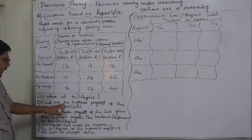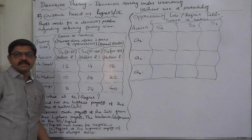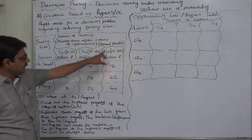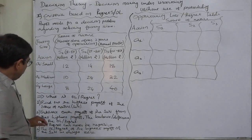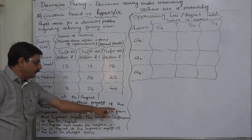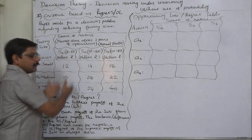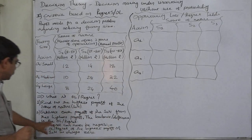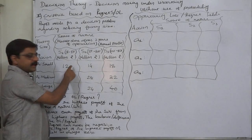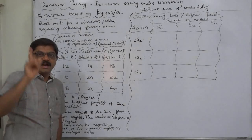There are a few simple steps to find out opportunity loss or regret. The first step is to find out the highest payoff from each and every state of nature. For example, in state of nature S1, 12 is the highest; in S2, 28 is the highest; and in S3, 40 is the highest. The second step is to subtract each payoff of the state of nature from that highest payoff. The difference is the opportunity loss or regret. In S1, 12 minus 12 gives an opportunity loss of 0 for the cell with the highest payoff.